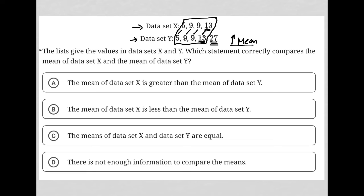Choice A says the mean of data set X is greater than the mean of data set Y — I don't believe so. Choice B says the mean of data set X is less than the mean of data set Y — yes, I definitely agree with that. Choice C says they are equal — I disagree. And choice D says there is not enough information — there is definitely enough information. So I'm going with choice B.